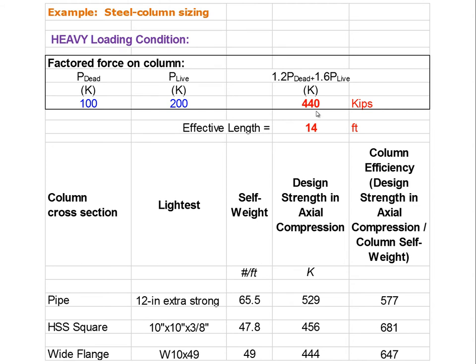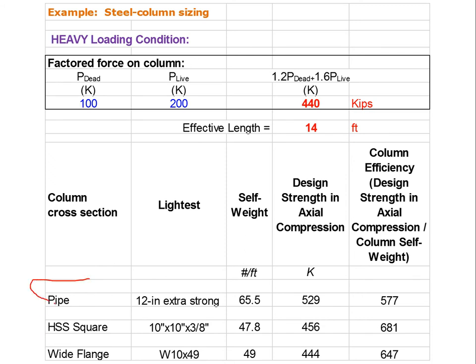Again, we're going to size for pipe, hollow steel section square, and wide flange sections. The table is already filled out, but we're going to go look at where we got these numbers from. The two important numbers are an effective length of 14 feet and a total factored axial load of 440 kips.